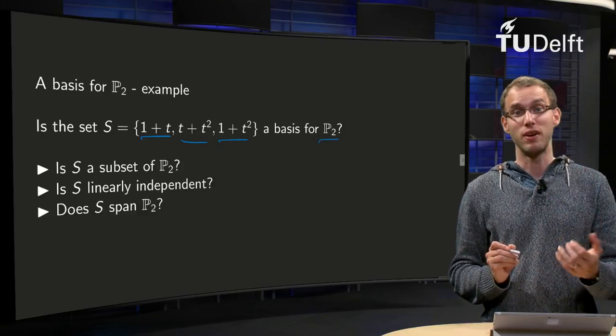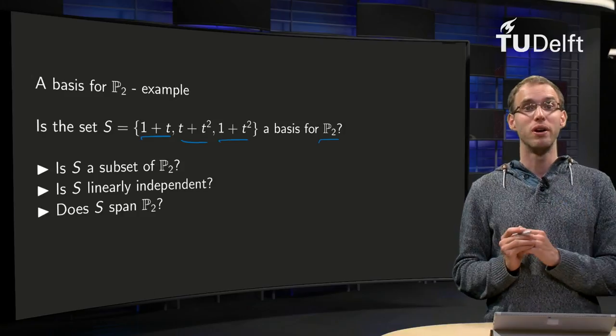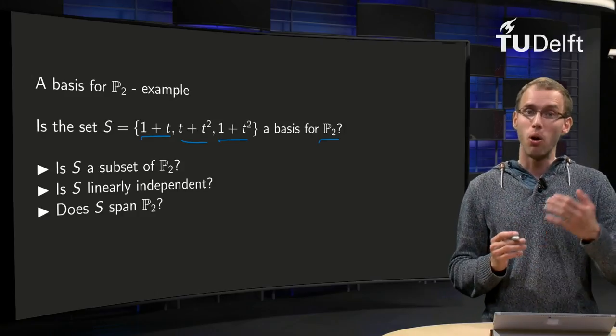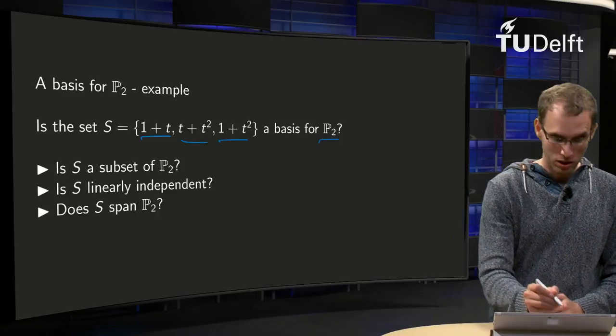Rather than that, it has to satisfy three properties. First of all, it has to be a subset of P₂. It is easy to see all three members are vectors in P₂, so this is fine.